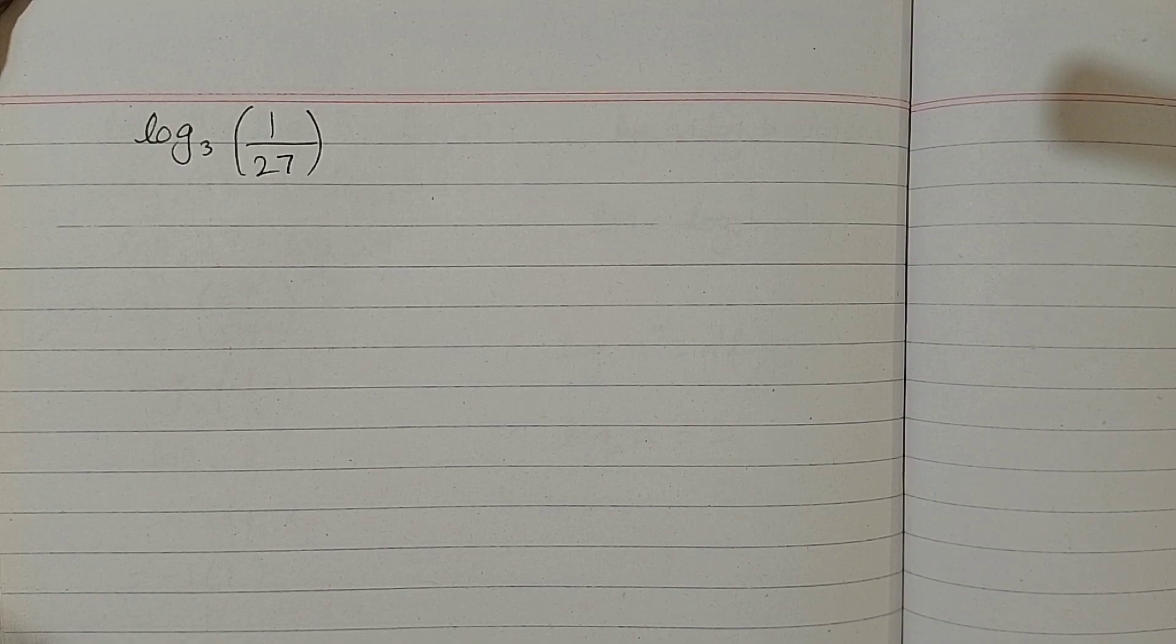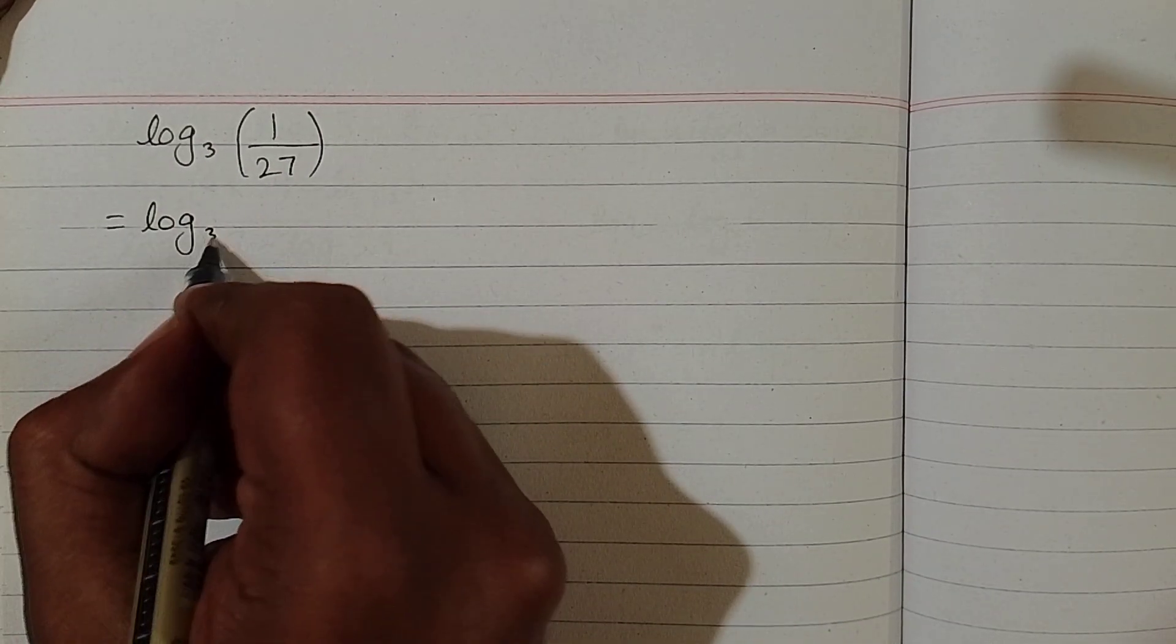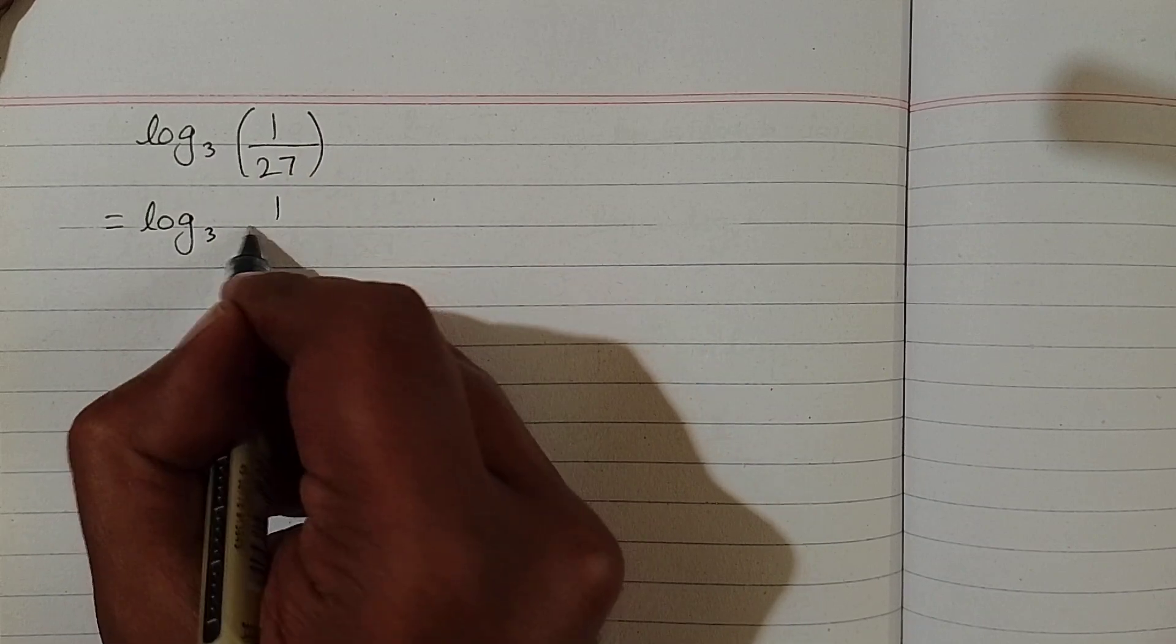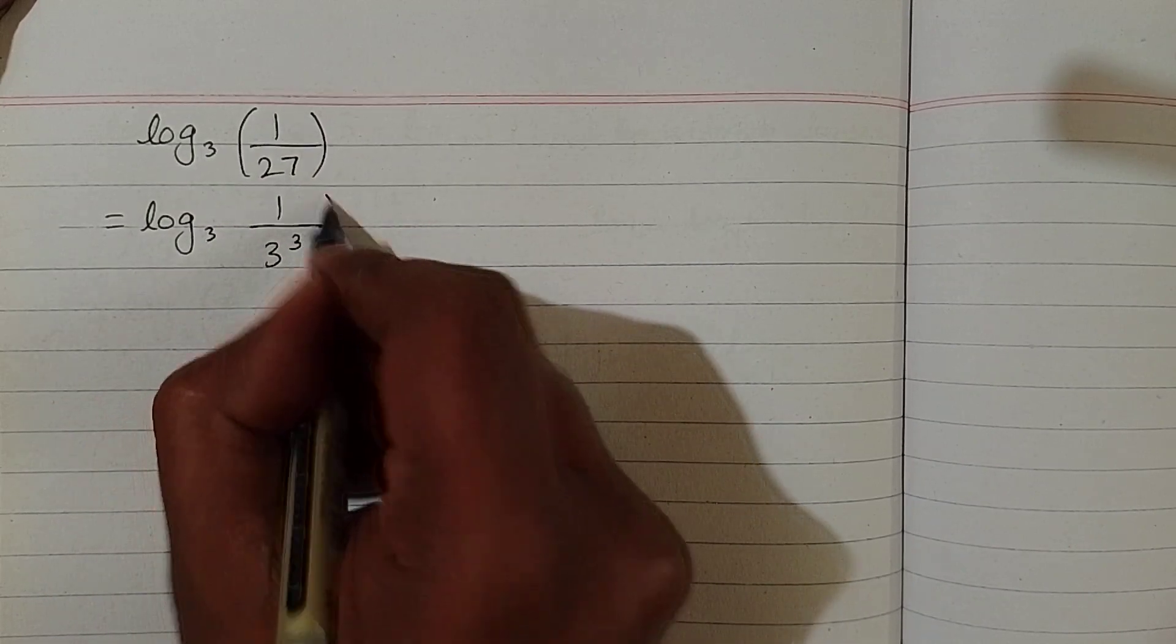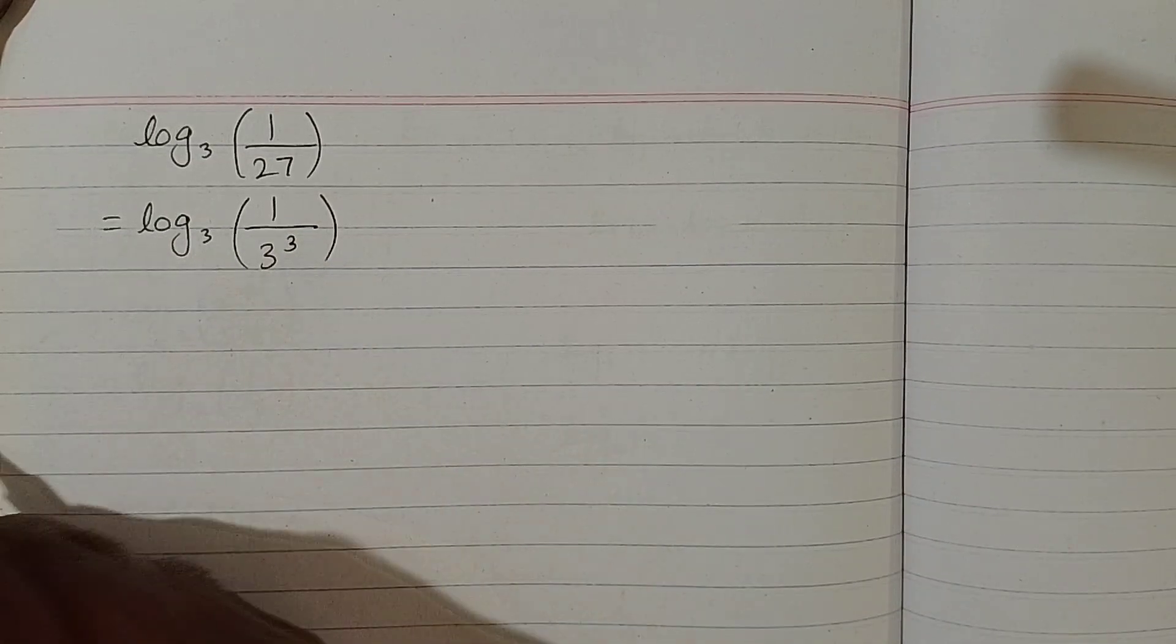In this video we will find the value of log of 1 upon 27 to the base 3. First of all, 27 can be written as 3 cube, so we have log of 1 upon 3 cube to the base 3.